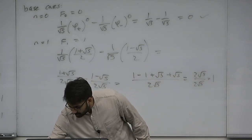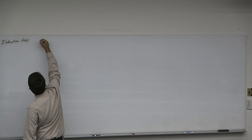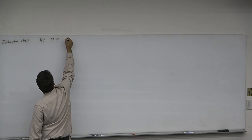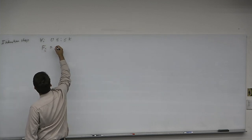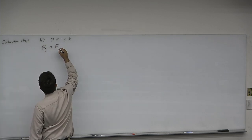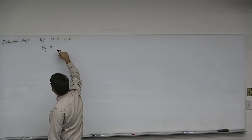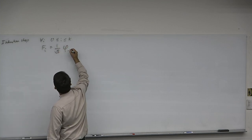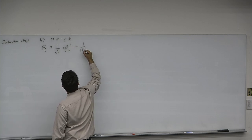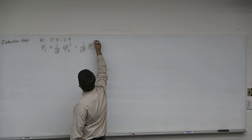Now for the induction step. Suppose for all i between 0 and some k that F(i) = (1/√5) × φ+^i − (1/√5) × φ−^i. We will prove that F(k+1) = (1/√5) × φ+^(k+1) − (1/√5) × φ−^(k+1).